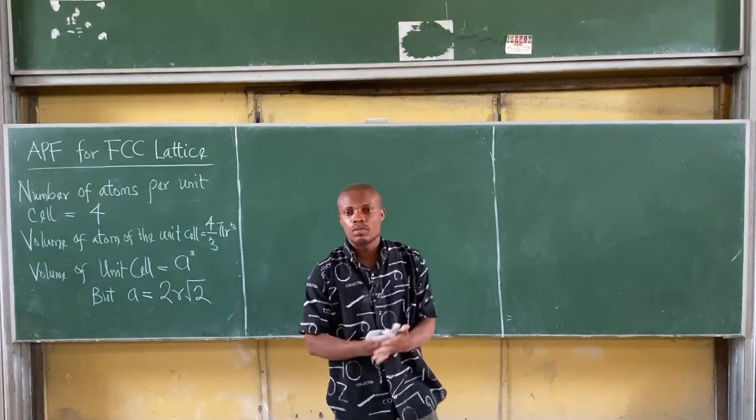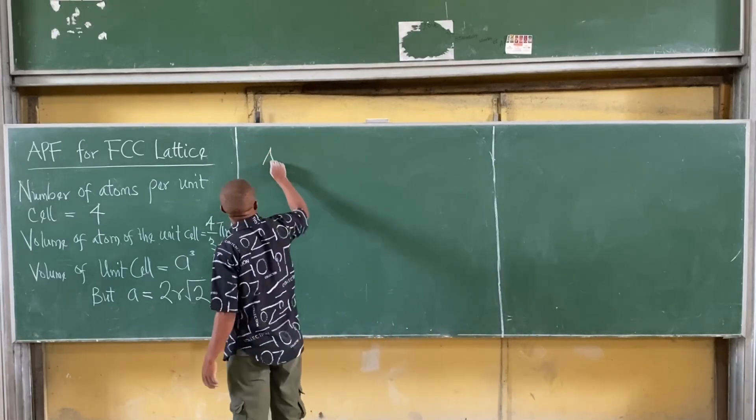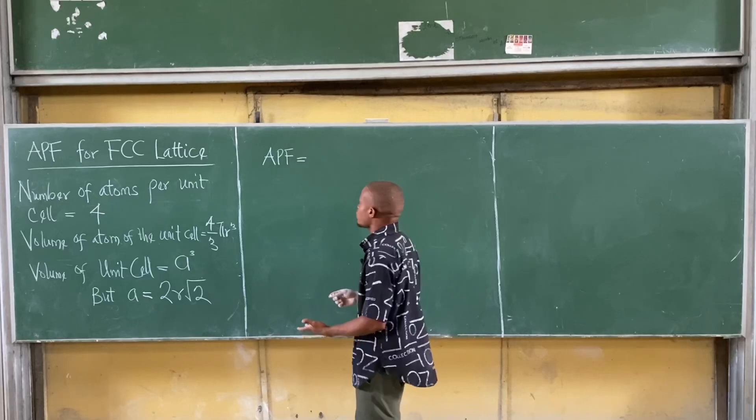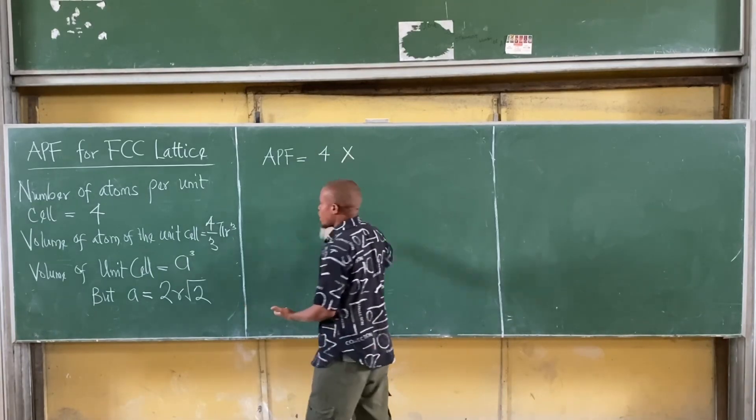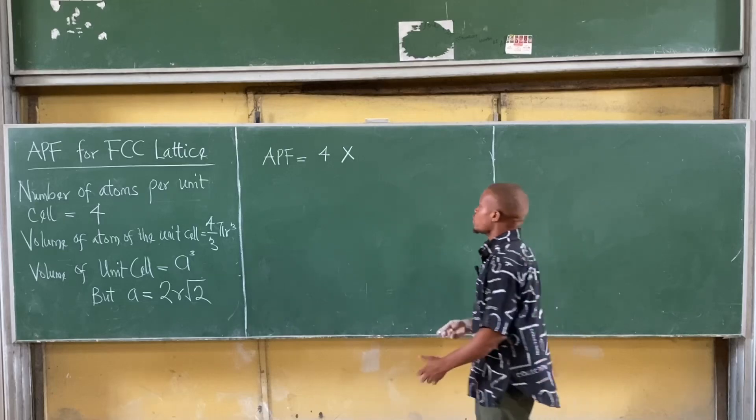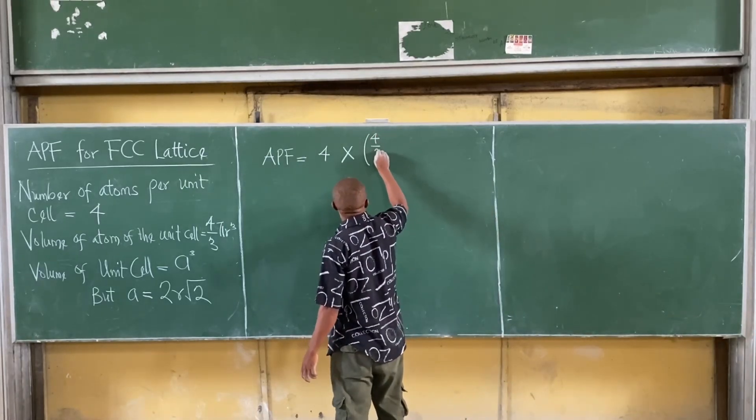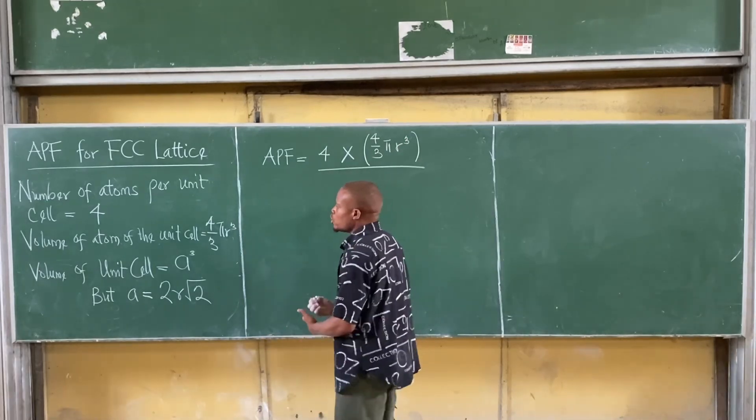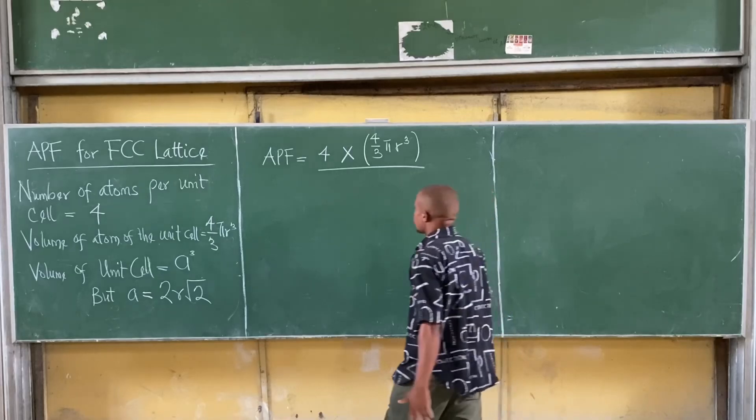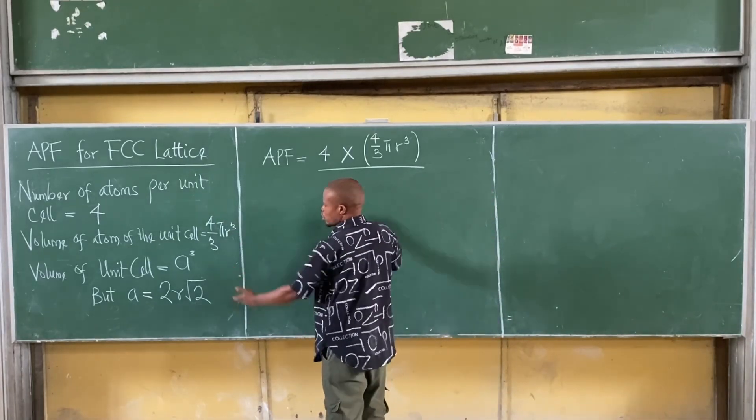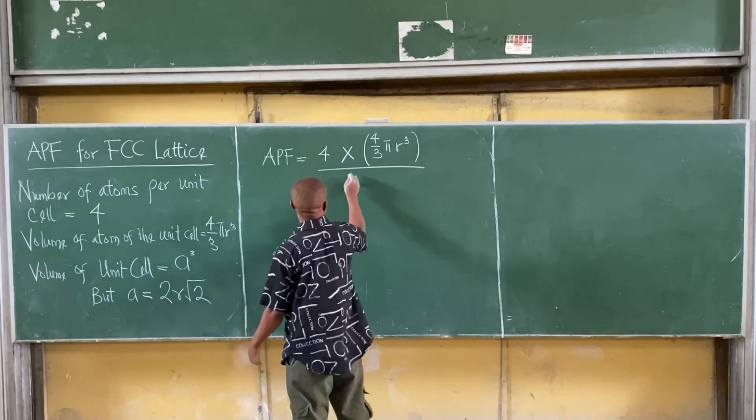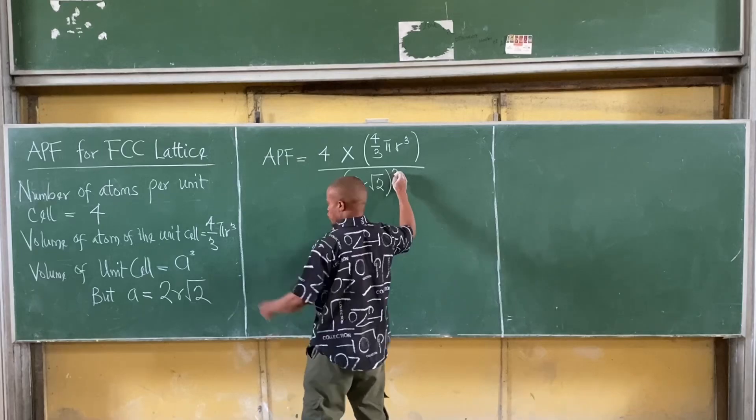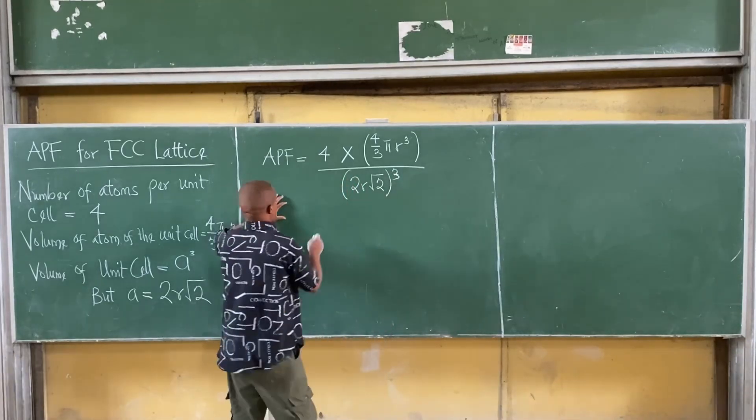So, let's infuse this into an atomic packing factor. We get that APF is equal to number of atoms per unit cell, which is 4 multiplied by volume of atom of the unit cell, which is 4/3π radius³, divided by the volume of the unit cell, which gives us a³. And we know that our a is 2R√2. Therefore, I'm having (2R√2)³.